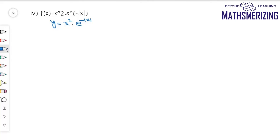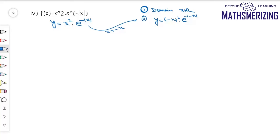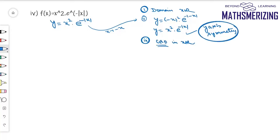The fourth question: draw the graph of y = x² · e^(−|x|). The domain has no restriction, so it is x ∈ ℝ. Replacing x with −x gives the same function, so this graph has y-axis symmetry. It is continuous on all of ℝ. I need to check differentiability at x = 0 because of the modulus — finding the left-hand and right-hand derivatives confirms it is differentiable at x = 0.